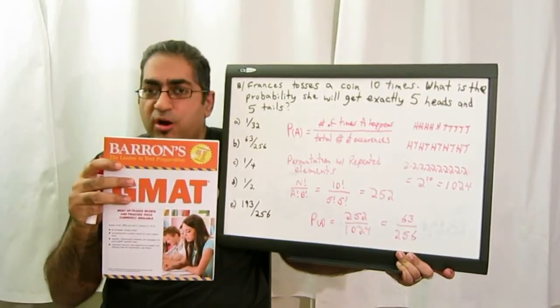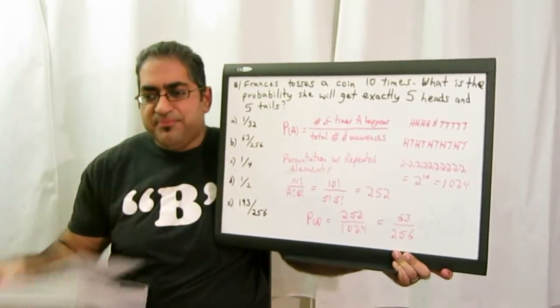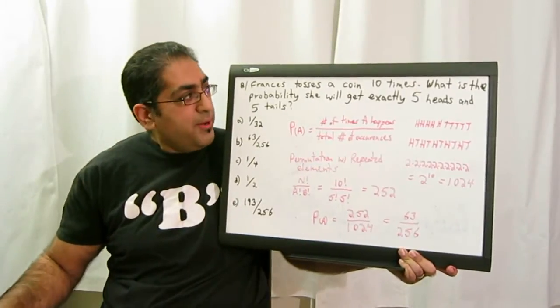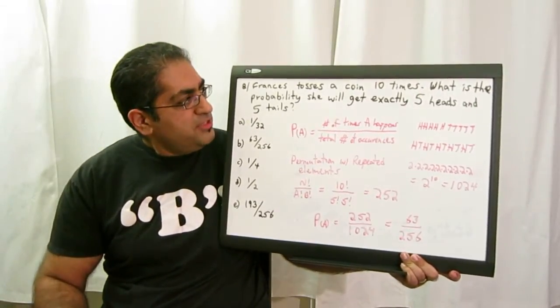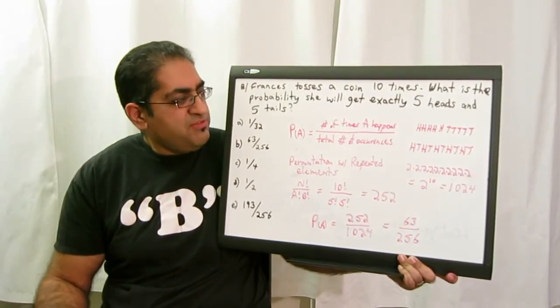We're going to look at a problem, a hard one, a probability problem on page 223, question number seven. So here we have it on the board. Question: Francis tosses a coin ten times. What is the probability she will get exactly five heads and five tails?